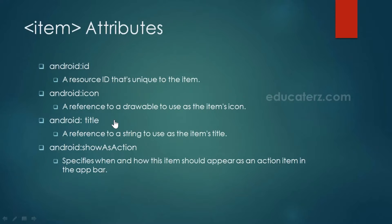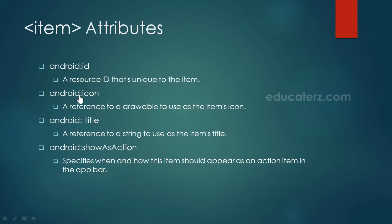Now let us see what attributes the item element contains. The most commonly used attributes are android:id, android:icon, android:title, and android:showAsAction. The android:id attribute creates a resource ID to identify which menu item the user clicked. The android:icon refers to a drawable file to display an icon for the item. The android:title is the name of your menu item. The android:showAsAction plays a key role — it specifies when and how these items should appear as an action item in the app bar.